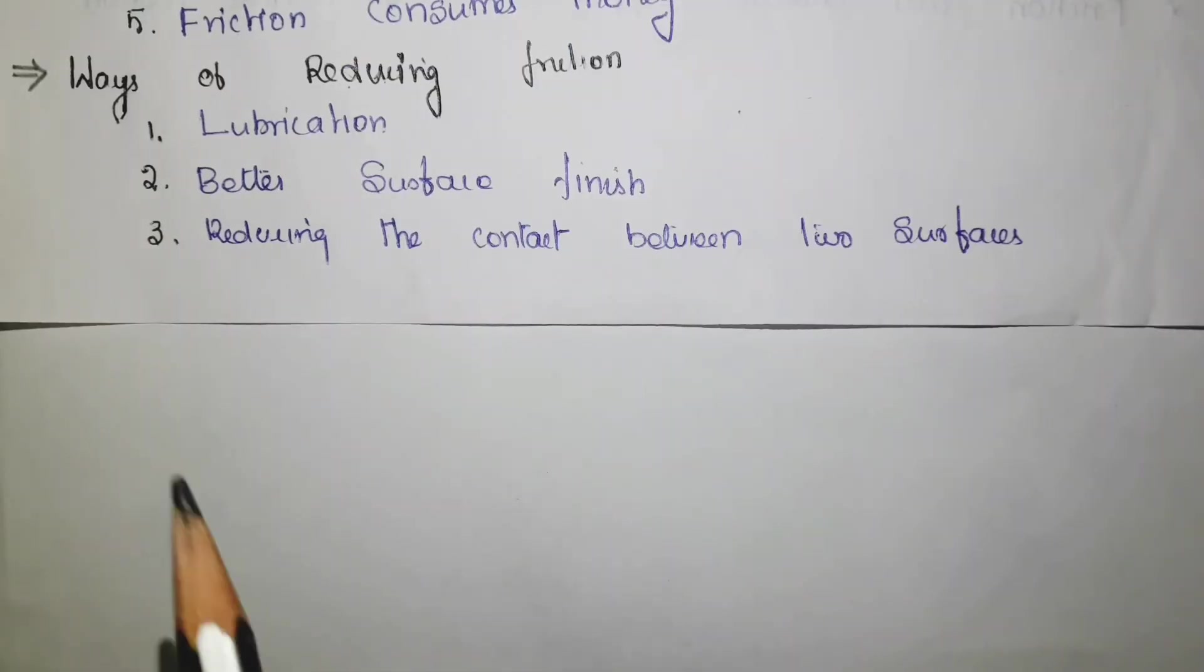Then the third topic is how to reduce friction. There are three common ways to reduce the friction. First one is lubrication. Everyone knows about lubricating oils being used in vehicles. It prevents the friction. Second one is when you go for better surface finish by many sophisticated processes. You can avoid the friction.